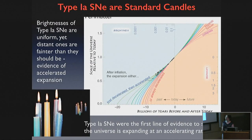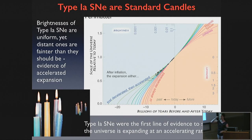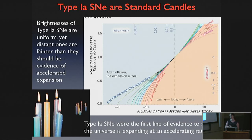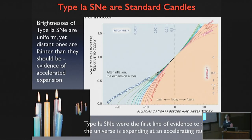Type Ia supernovae can be used as standard candles. There is a way to make the brightness of Type Ia supernovae uniform — like two identical candles at different distances, you can look at their relative brightness to understand how far away the distant one is. When this experiment was done in the 1990s, partly led here at the CFA by Bob Kirshner and Adam Rees, it turned out that Type Ia supernovae far away were too faint relative to what they should be. This was evidence that the universe is undergoing accelerated expansion right now. The Type Ia supernovae were the first to demonstrate the accelerated expansion of the universe, and they won the Nobel Prize in 2011 for that discovery.